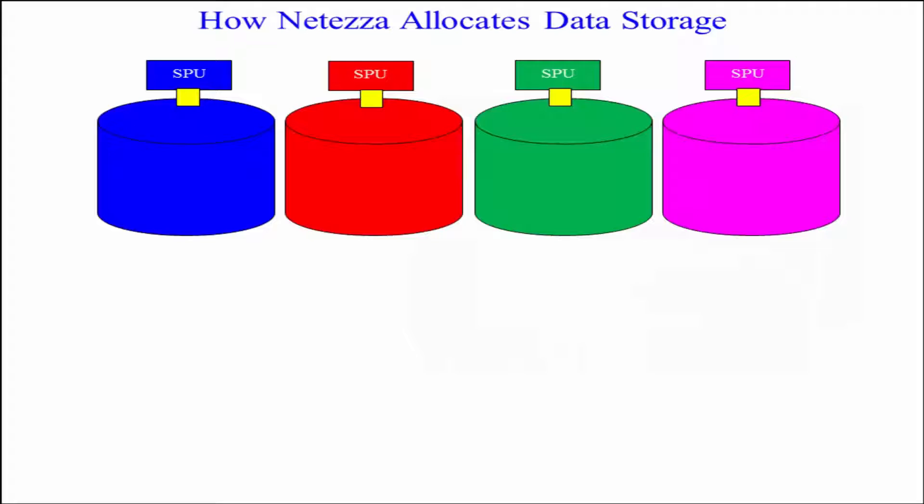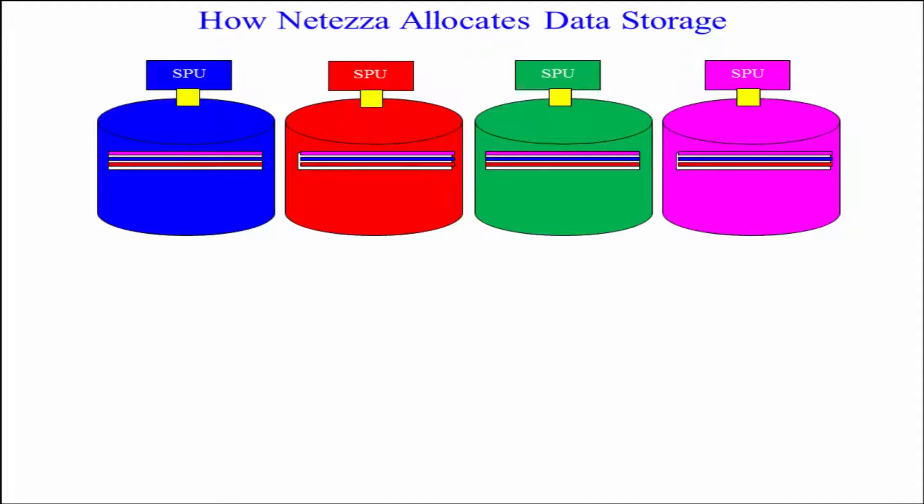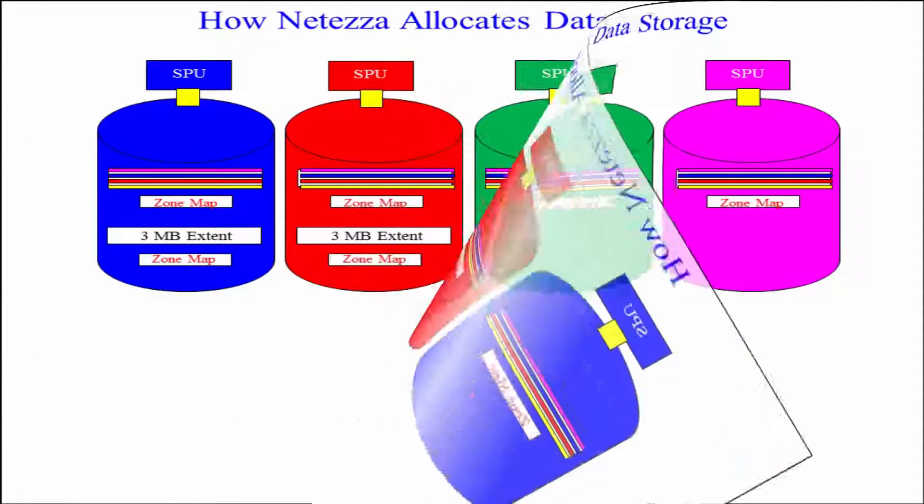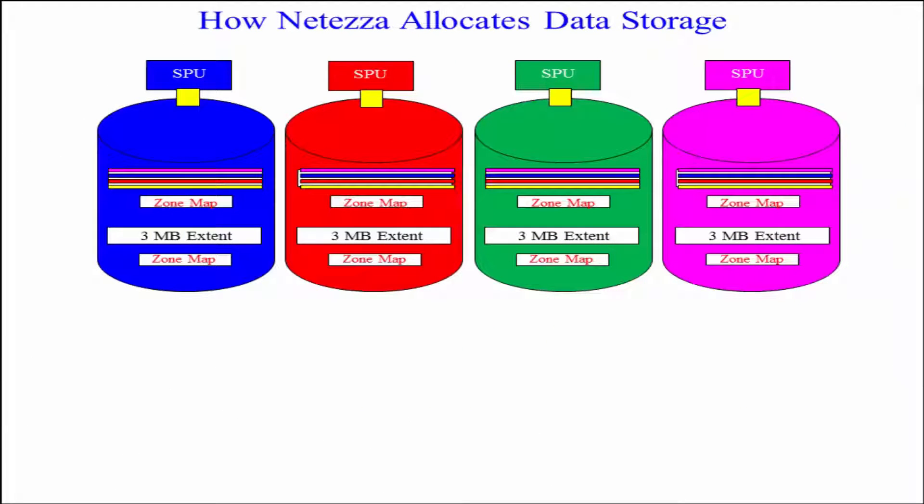When you go to load that data, every one of them opens up a three megabyte extent, and the rows are loaded in that three megabytes until it says, hey, I filled that up. That suitcase is filled up, that block's filled up, that extent's filled up, and they open another one.